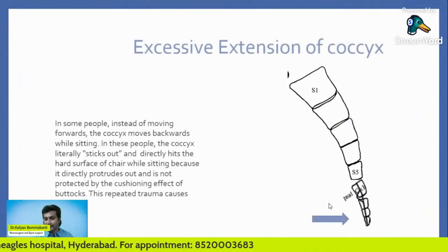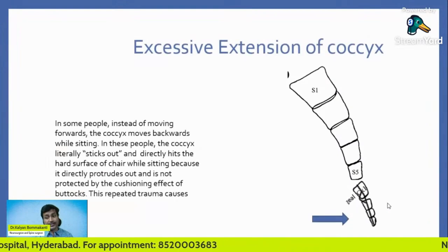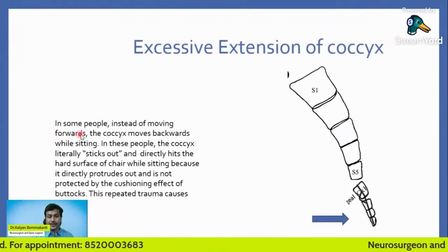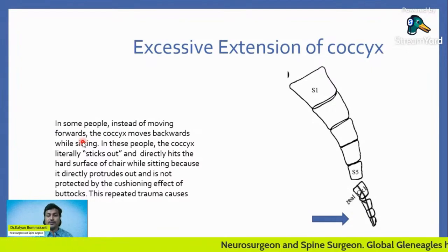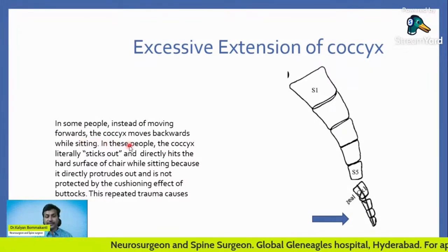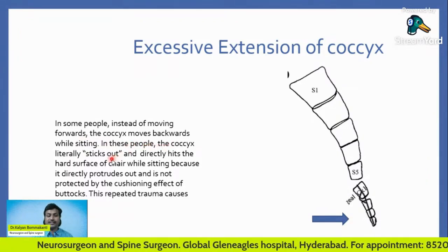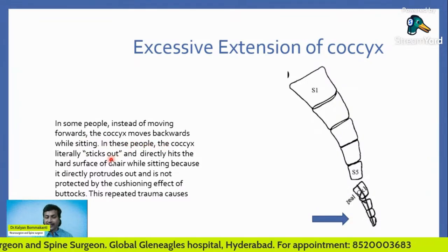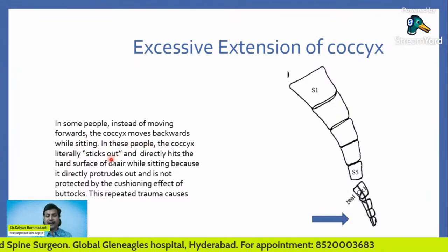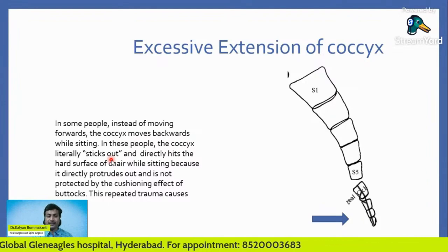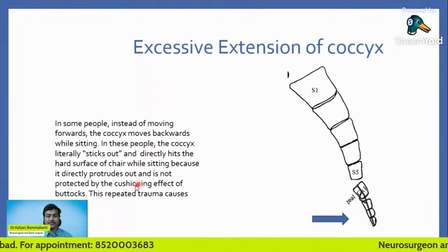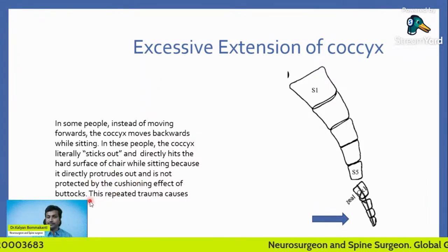Observe this — this is the reverse. In some people, instead of moving forwards, the coccyx moves backwards while sitting. In these people, the coccyx literally sticks out and directly hits the hard surface of the chair while sitting, because it directly protrudes out and is not protected by the cushioning effect of the buttocks. This repeated trauma causes pain.